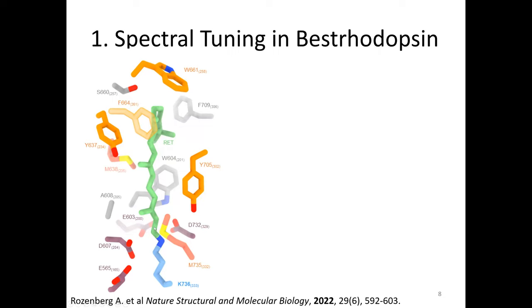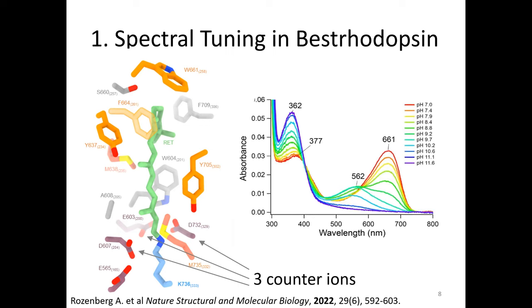The first part is regarding spectral tuning in bestrodopsin. As spectral tuning we call the effect of the environment to shift the absorption maximum of the chromophore. Here you see a visualization of the binding pocket. The green elongated molecule is retinal. It is covalently bound to a lysine and carries a positive charge. This positive charge is surrounded by three counter ions - these are carboxylate side chains of aspartate and glutamate. They carry a negative charge. This is extremely unusual because typical rhodopsins have one or two counter ions, but this is the only one that carries three counter ions.